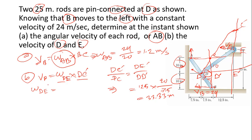Now we calculate omega DE. We know VD equals omega AB times DC. Omega is 1.2 and DC is 12.5, so VD equals 15 m/s. Then omega DE equals 15 divided by 13.33, which gives us 4.5 radians per second. This is the angular velocity of rod DE.